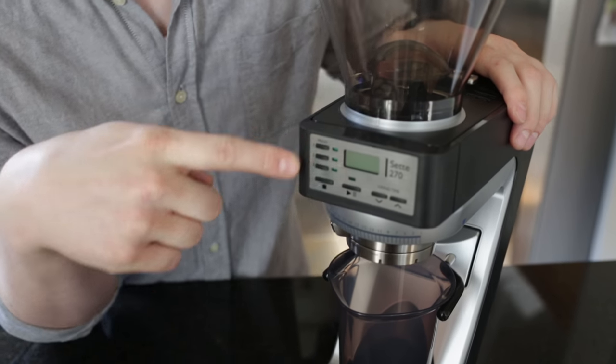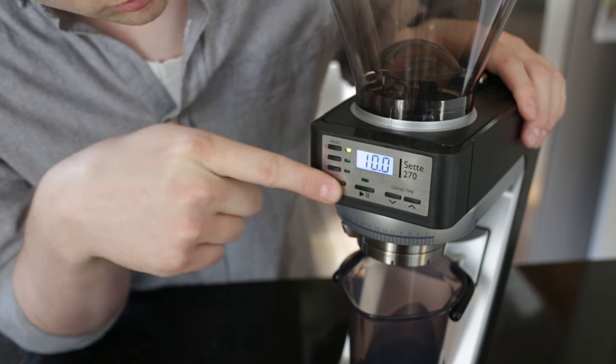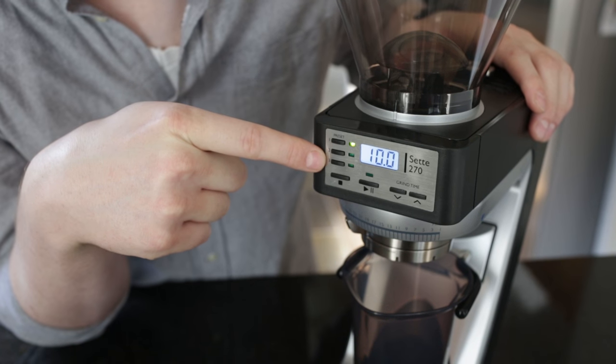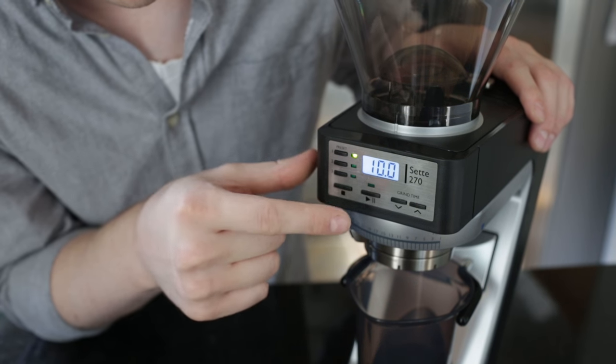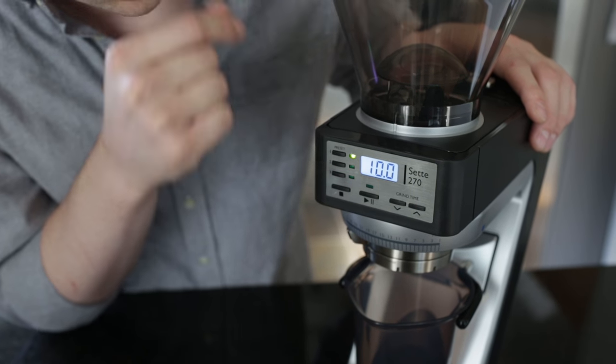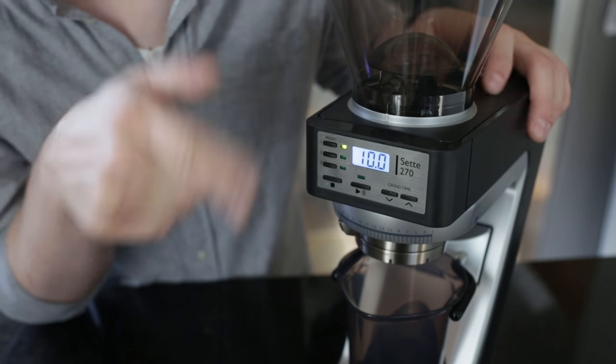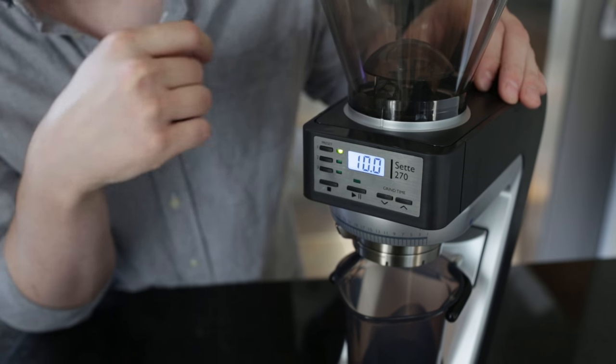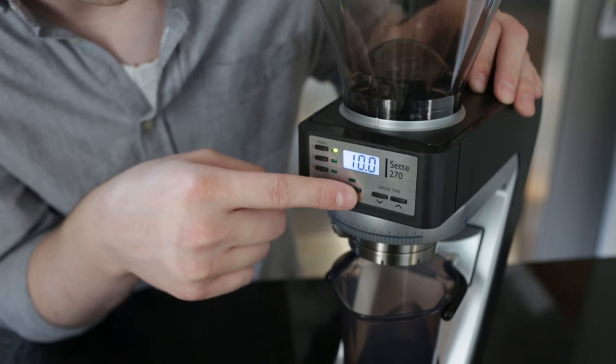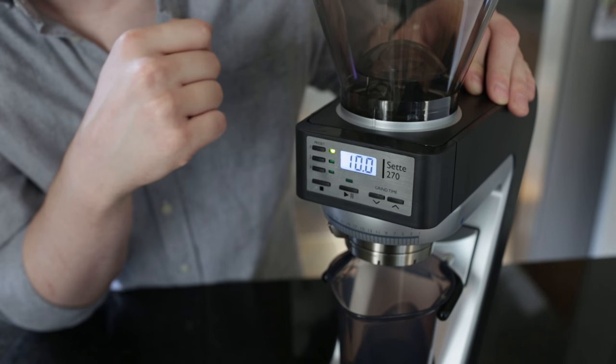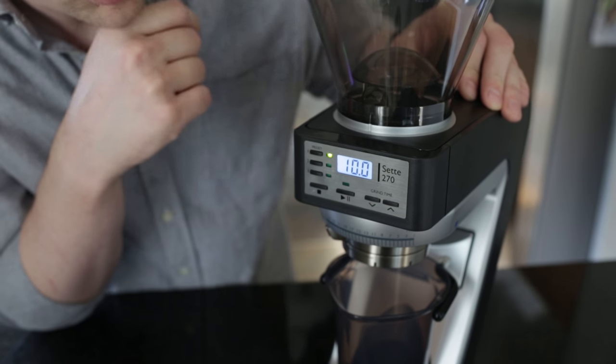Now up front, like the Vario before it, we have timed presets. We have three timed presets and then the ability to adjust the grind time as well as an on-demand feature where if you just hold down that play button for a few seconds, it will start to grind and actually count up for you. So if you're dialing in, that's a really great method. You just hold that button down, figure out how long it takes to grind your dose, and then you can program that in.